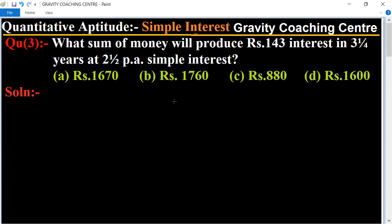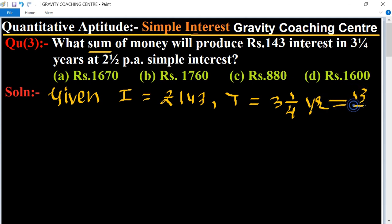So in this question, given Interest equals rupees 143, and Time is also given as three and one-fourth years, equal to thirteen by four years.